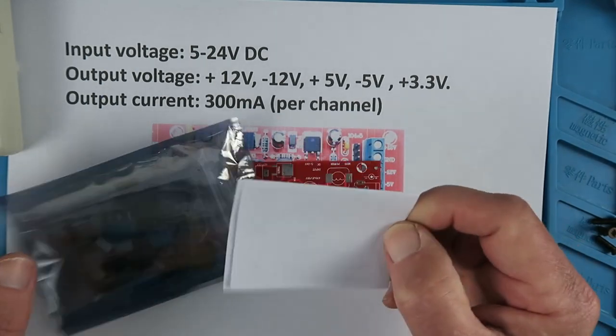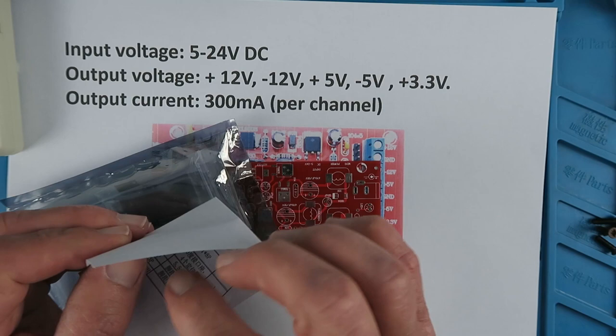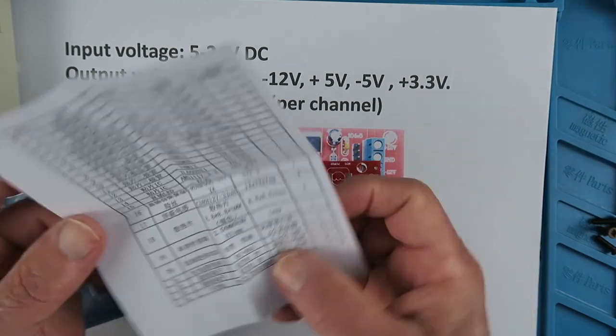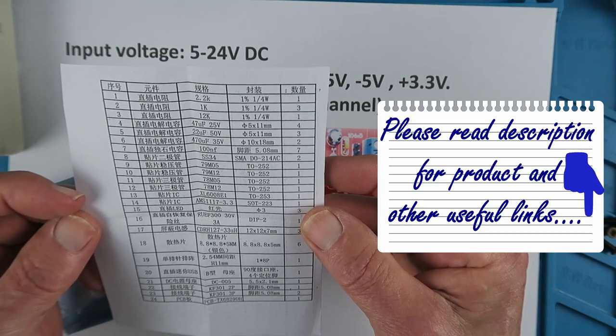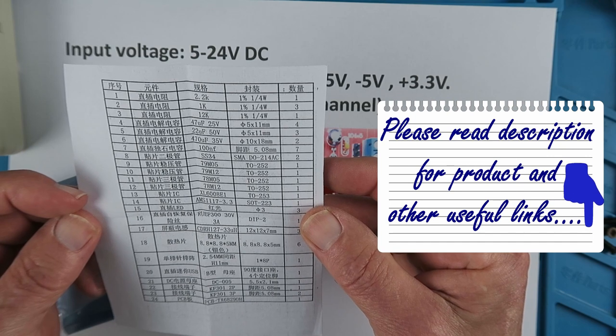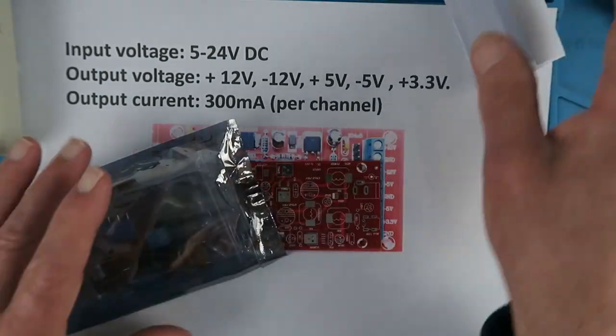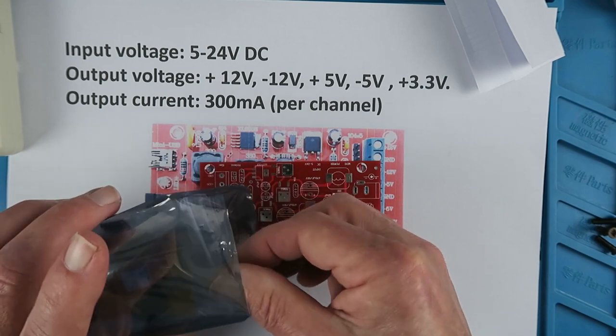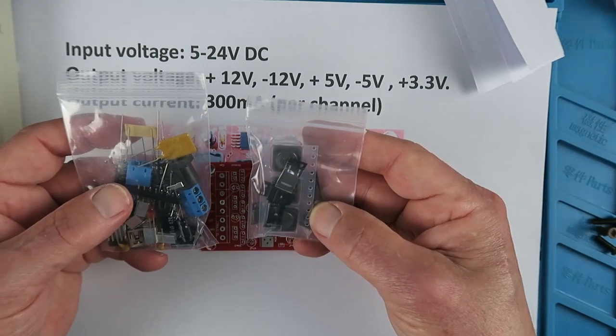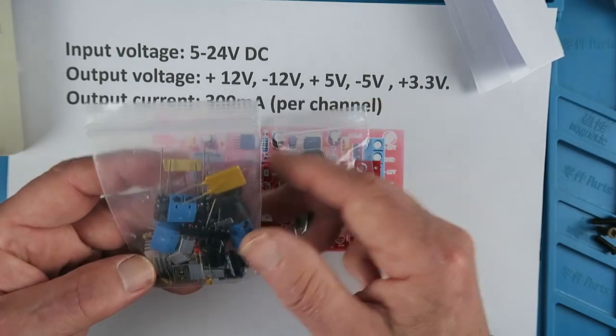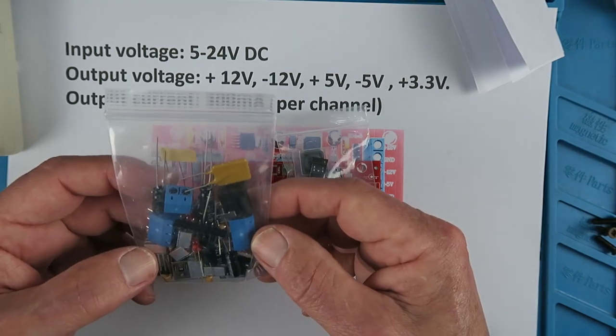We get a circuit board. What's this? It's a packing list of all the parts that we can check against if there's anything missing. And some surface mount components and our usual discrete components.